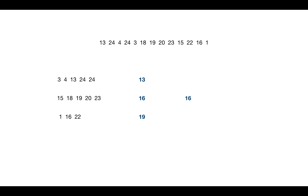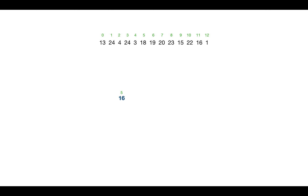We divide the left subarray into chunks of five elements, sort each subarray, and get the median of each. We then find the median of those medians and use it as a pivot again. Using 16 as the pivot for this subarray, after one iteration 16 lands at index 5. This is still not the index we're searching for, so we consider both the left and right subarrays relative to index 5. The element we're searching for is in the right subarray — it's the 12th element, at index 11.